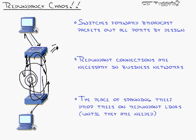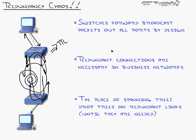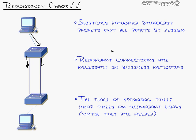You might think the TTL field inside a packet would save you. But the TTL is a Layer 3 field — only a router can subtract time from the time to live. In that purely switched picture, there are no routers, so the packet is going to cycle the network round and round and round, destroying everything out there.